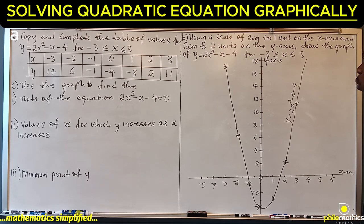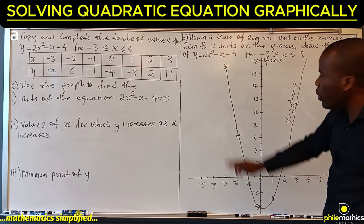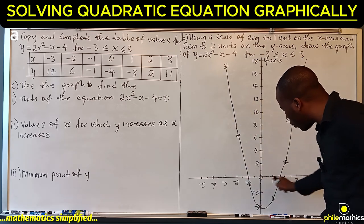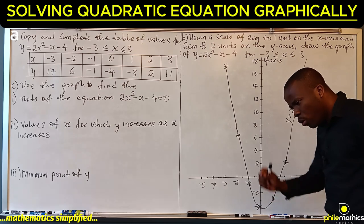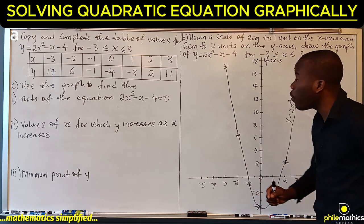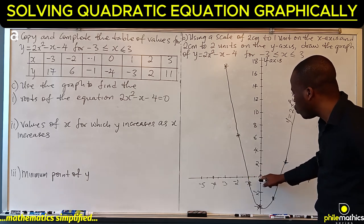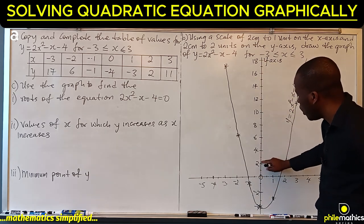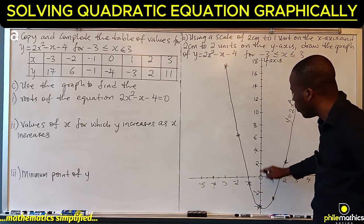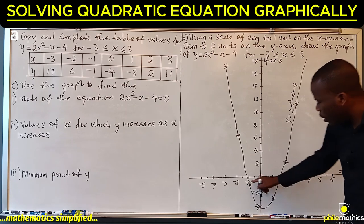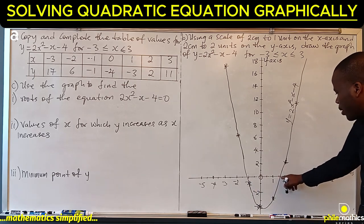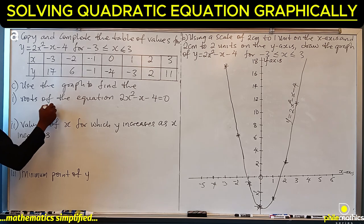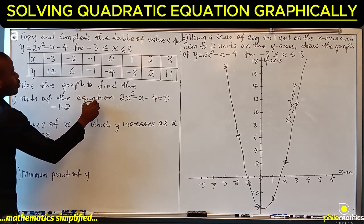The roots of the equation are the points where the graph cuts across the x-axis. If you are reading from your graph, each small box on the x-axis represents 0.1, since the scale is 2cm to 1 unit. For the y-axis with 2cm to 2 units, each box is 0.2. Reading from the graph, the roots are approximately minus 1.2 and 1.6.